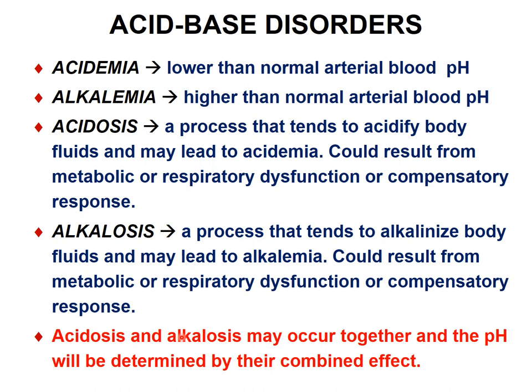In our body, there are countless metabolic processes that produce or consume hydrogen. The net sum of these processes determines the pH or hydrogen ion concentration. So 'emia' describes the final state, while 'osis' — acidosis or alkalosis — describes the processes leading to acidemia or alkalemia.